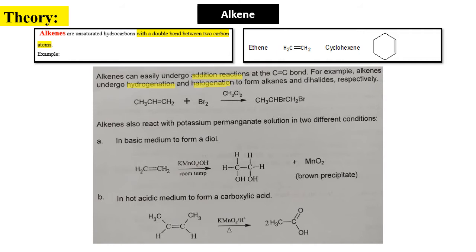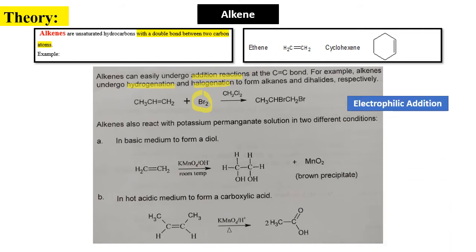Halogenation means a halogen such as bromine is added. More specifically, the type of reaction for alkene is electrophilic addition, forming a dihalide product — for example, 2Br (dihalide).